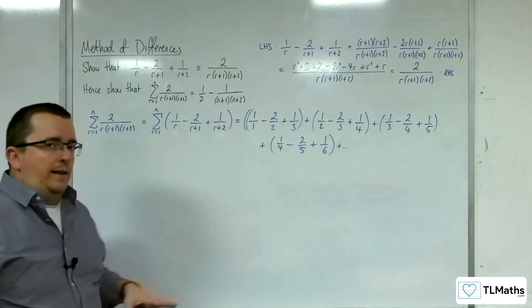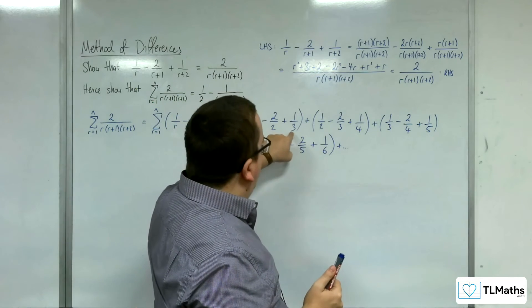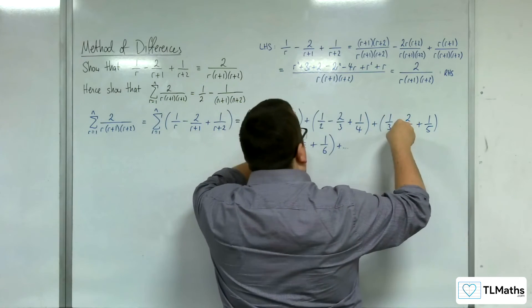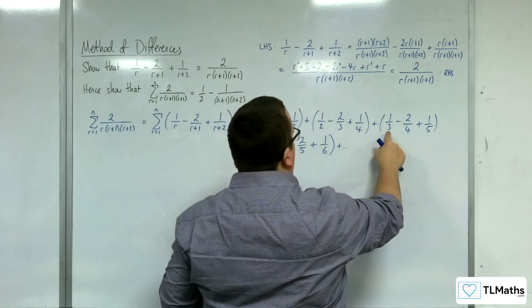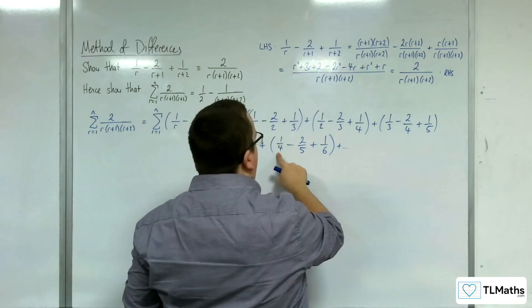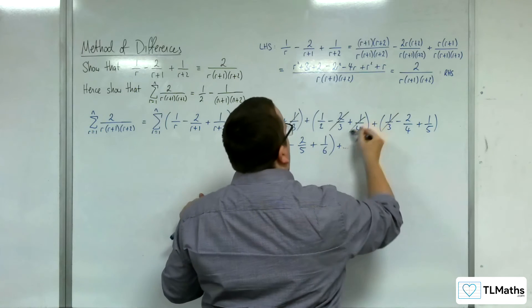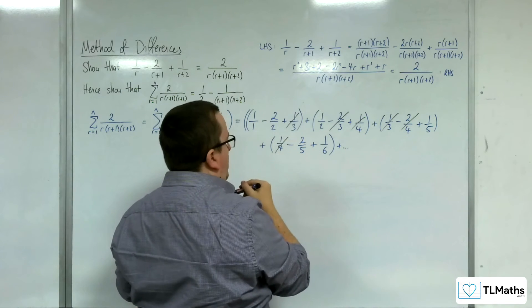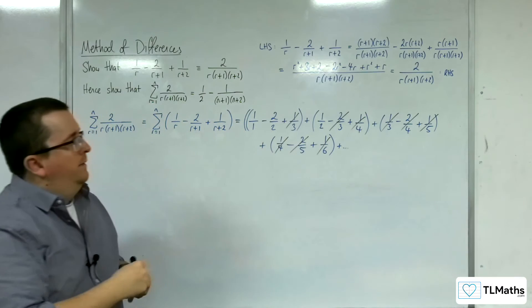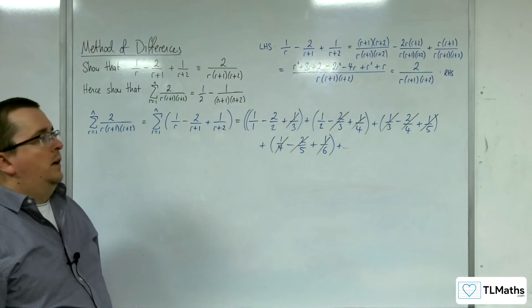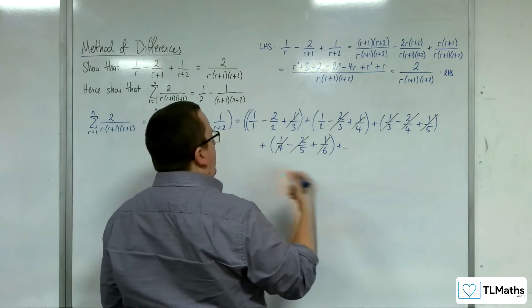They're actually cancelling in triplets. It appears to be the right-hand term, the middle term, and the left-hand term of three consecutive rows that appear to be cancelling out. So: right, middle, left from one row cancels with right, middle, left from adjacent rows. These cancellations keep going, whereas certain terms will remain.